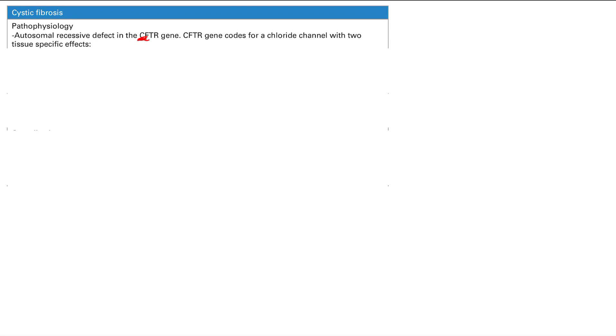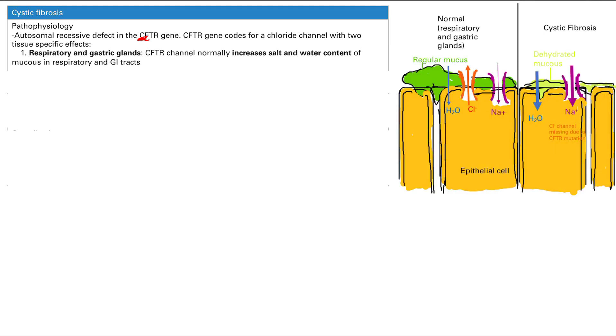The CFTR gene codes for a chloride channel and has two tissue specific effects. In the respiratory and gastric glands, the CFTR channel normally increases salt and water content in the mucus. In normal mucus, you get increased salt and water content in the respiratory and GI tracts.